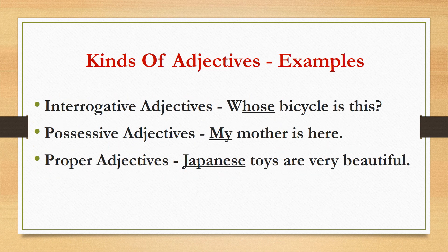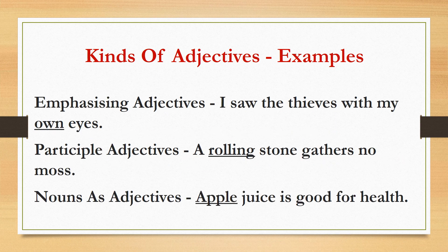Interrogative adjectives: Words like what, which, whose, when are used with nouns and pronouns to ask questions. Example: Whose bicycle is this? Here, we are asking a question by using the word whose. Possessive adjectives are used to show possession or ownership. Example: My mother is here. Using the word my, we are showing ownership. Proper adjectives: Japanese toys are very beautiful. The word Japanese is a proper adjective as it is formed from the proper noun Japan. Emphasizing adjectives are used to emphasize the noun they modify. Example: I saw the thieves with my own eyes. Here, own is the word that is emphasizing the noun eyes.